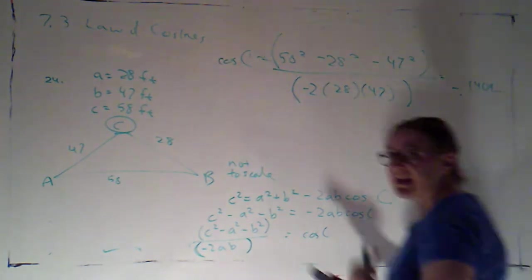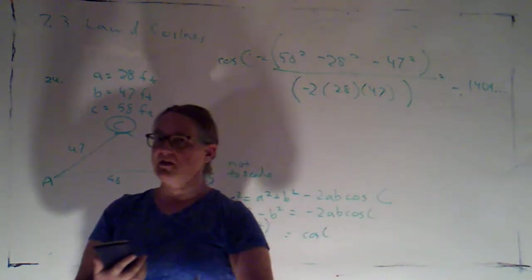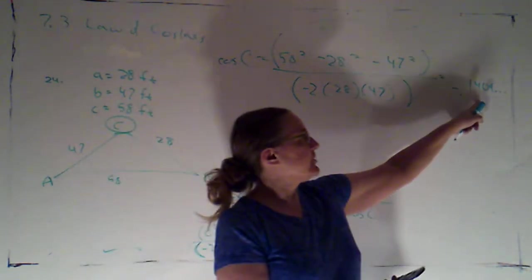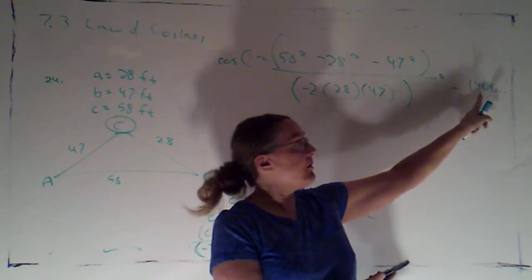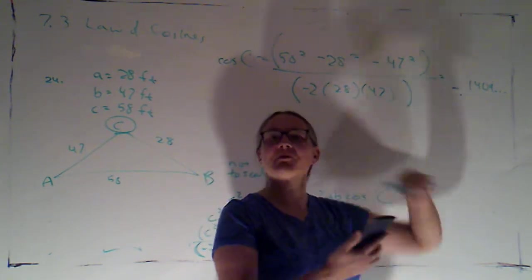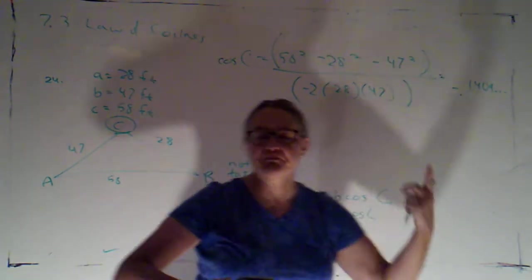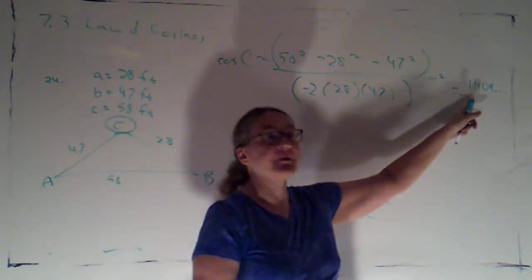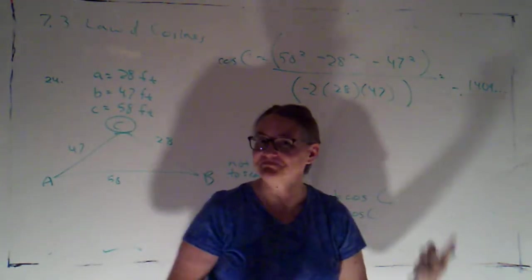One thing you might want to do on exams, I don't want to have to enter that in again to my calculator, but I might just write down that I got negative point 1409 blah blah blah. That way, just if you make a mistake plugging something into your calculator, that makes it a little bit easier for me when I'm grading to follow, oh you were right up until this point, it was a problem taking the inverse cosine, or oh you were wrong at this step but you took the inverse cosine correctly.